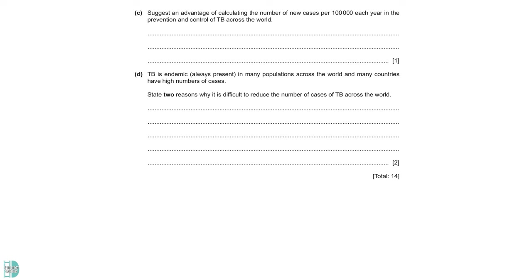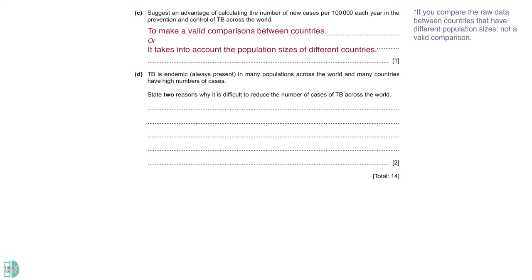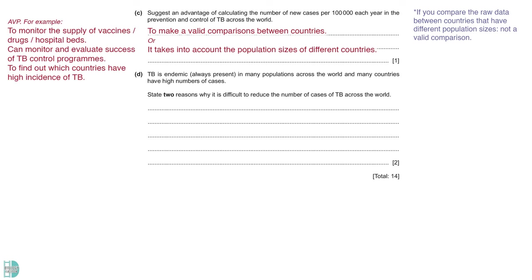C suggests an advantage of calculating the number of new cases per 100,000. This is a commonly asked question. It is not valid if you compare the raw data between countries with different population sizes. This conversion takes into account the population size of a country and allows a better comparison. D, state two reasons why it is difficult to reduce the number of cases of TB across the world. The command word state means you only need to provide a straightforward statement. When the question only asks for two reasons, the examiner will not mark extra answers. Only the first two are considered.